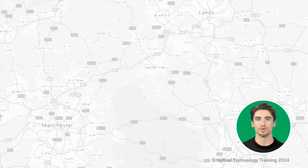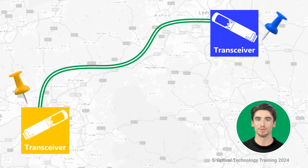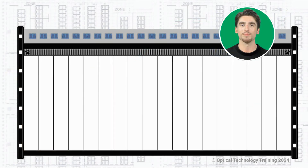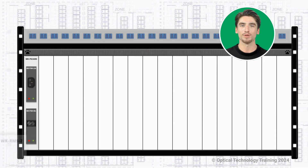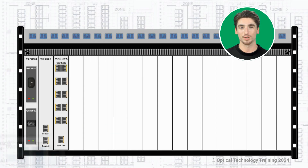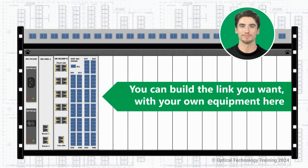When you use Dark Fibre, you will get access to a continuous optical circuit, which is usually a pair of fibres, that provides a direct connection between two specific endpoints. You are then responsible for lighting up that fibre with your own equipment at each end. This gives you full control of the link and of the traffic that you put over it.